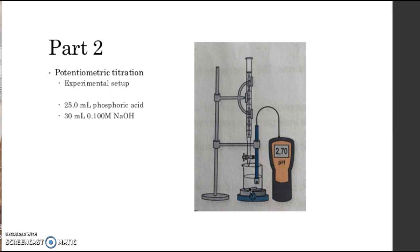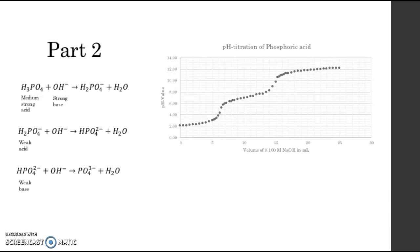It is very important that the pH meter stays in the solution during the whole experiment. During this experiment we would add the sodium hydroxide in portions of 0.5 milliliters, and when the pH was starting to change drastically we would add smaller portions so it would be more clear when the endpoint was actually occurring. From this information and these numbers we could make a graph, and from this graph we can see that there are two endpoints — though there is actually also a third endpoint, it is just not visible.